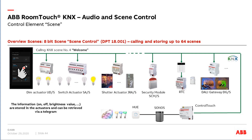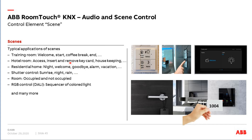For example, in a residential home we press the 'Welcome' button, which calls scene number 4. Some lights go on — perhaps the entrance area at 80%, the living room, the kitchen. Socket outlets switch on, shutters drive to a position, the security system is unset, the room temperature control goes to comfort mode, lights come on in the living room, music starts playing on the Sonos system, and Philips Hue is also integrated. Typical scenes include: training room welcome, presentation start, coffee break, hotel key card insert/remove, and residential room occupied/not occupied.